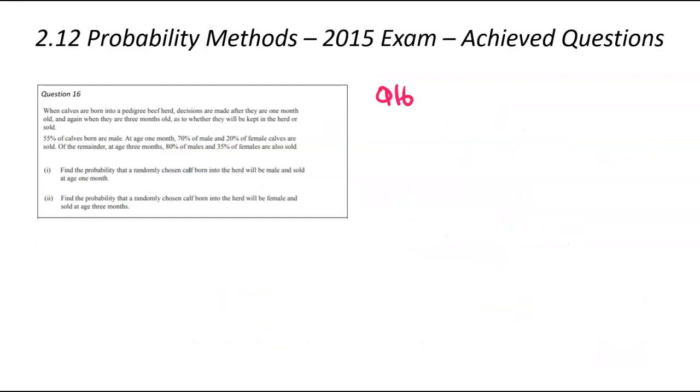Question number 16, our final lot of achieved questions from that 2015 exam. This one's about a beef herd or some calves. Decisions are made after one month and three months as to whether or not they're going to be kept or sold. 55% are males, which means the rest are females.